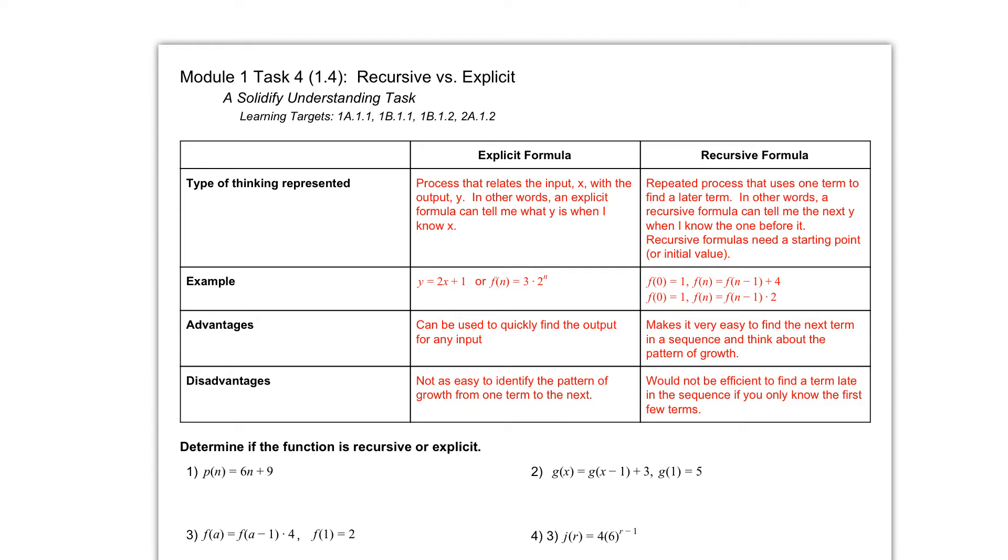So you need the previous to find the next one. So if I want to find that 100th term, I actually need to know the 99th, and to find the 99th I need to know the 98th. So you have to work your way up to that last term, whereas an explicit you can just find any one.